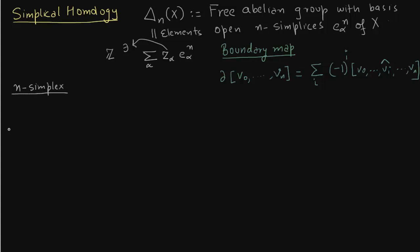So let us now write what the n simplex are. We first start, a zero simplex is just a vertex, just a point. So we will start with one simplex that is the edge.